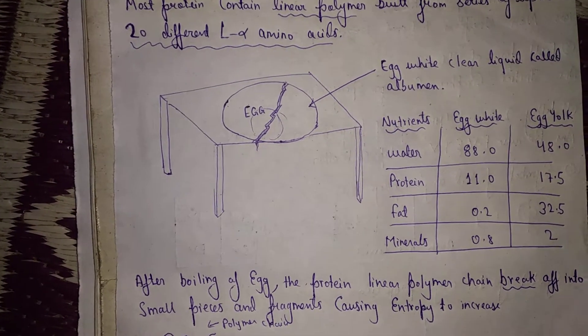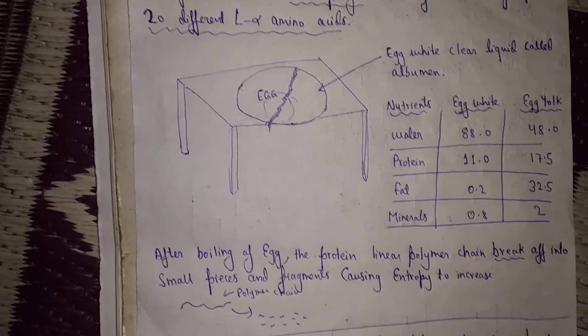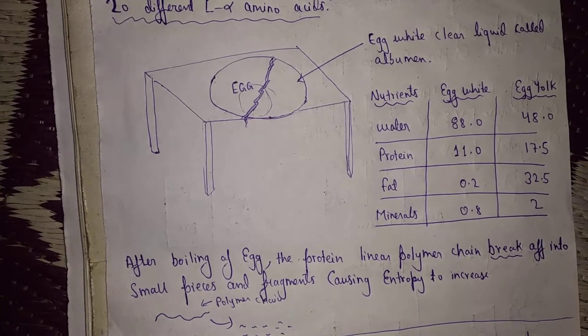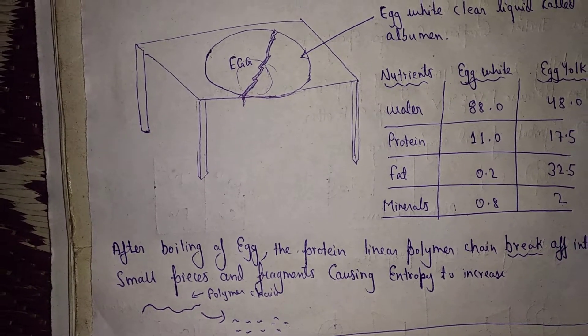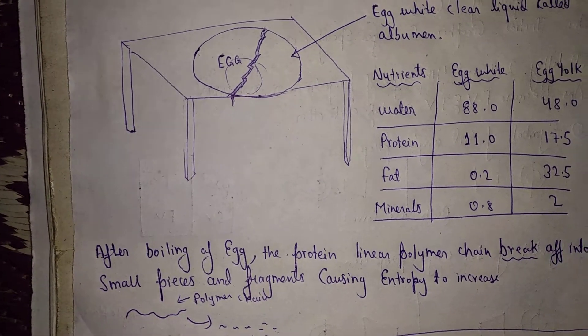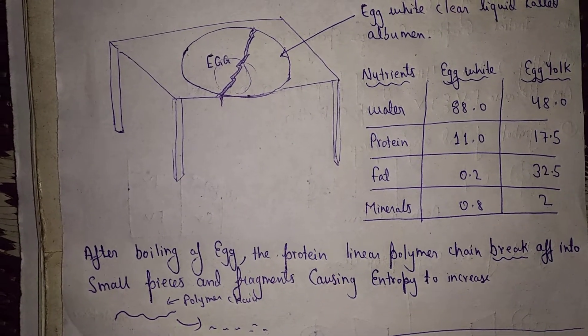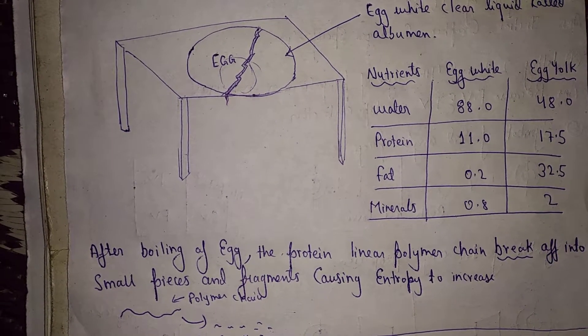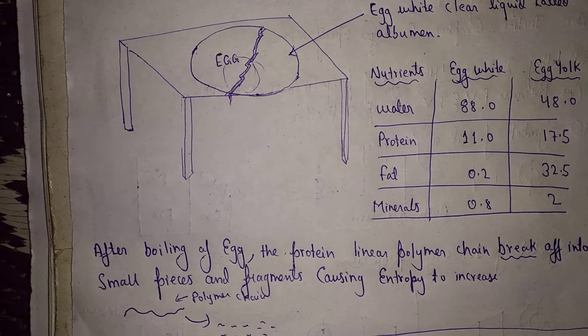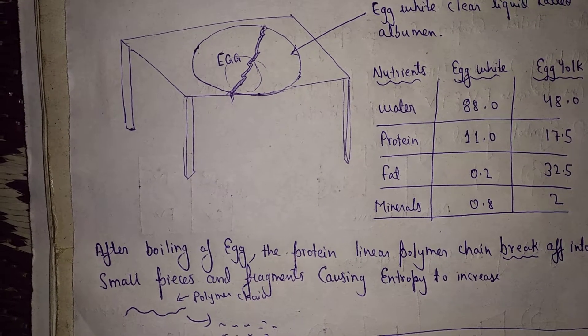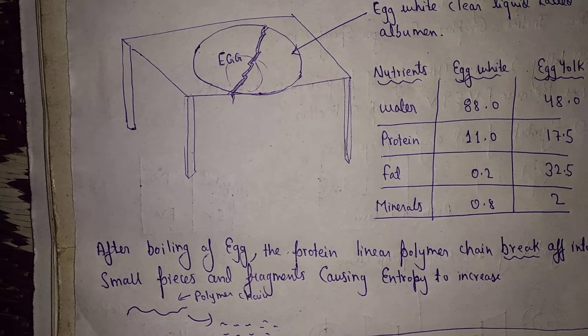After boiling of the egg, the protein linear polymer chain breaks off into small pieces and fragments, causing entropy to increase.